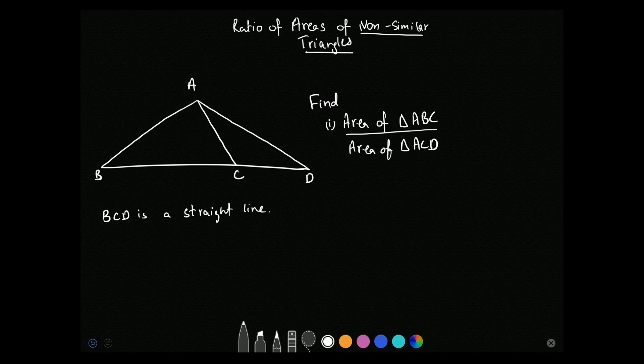First of all, I will tell you what is a common error. A common error is that let's say BC is B1 and CD is B2. A common error is that they treat these as similar triangles and take B1 upon B2 and then square it. Which is completely wrong. The reason is that these are not similar triangles.